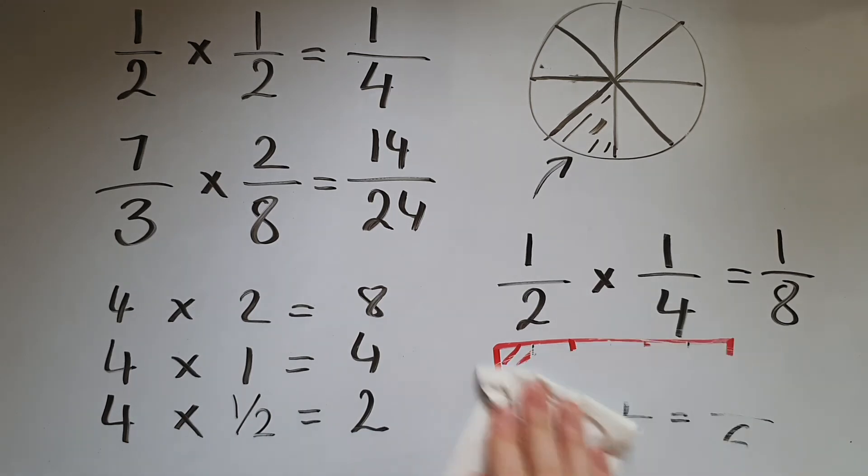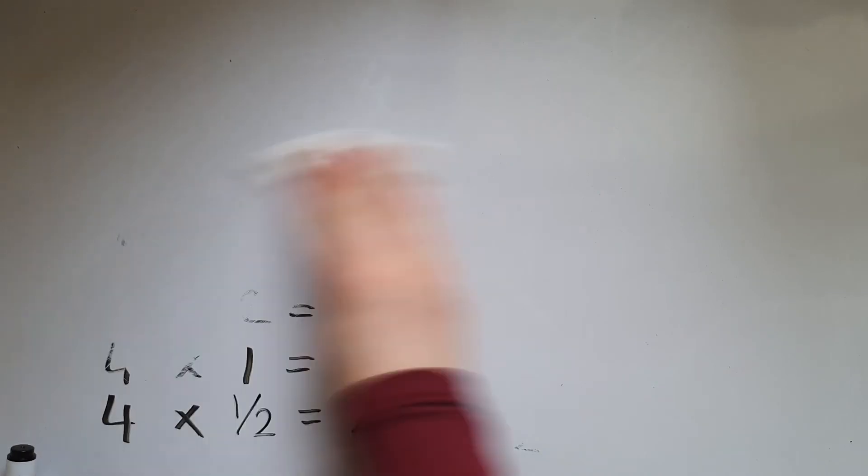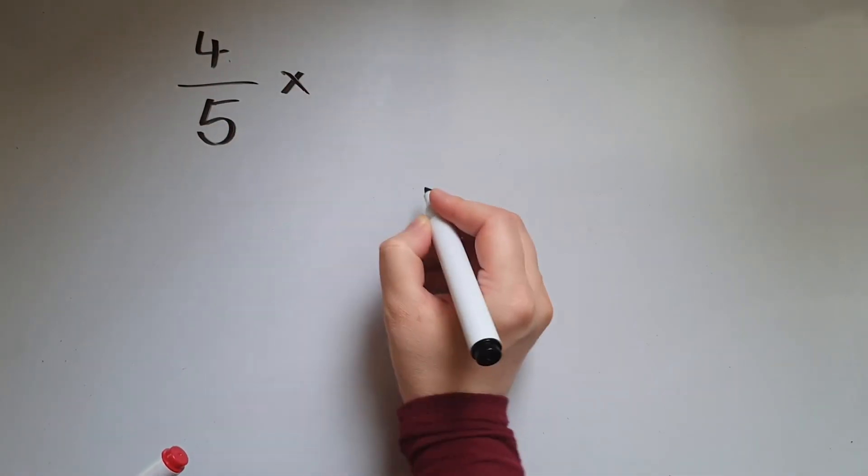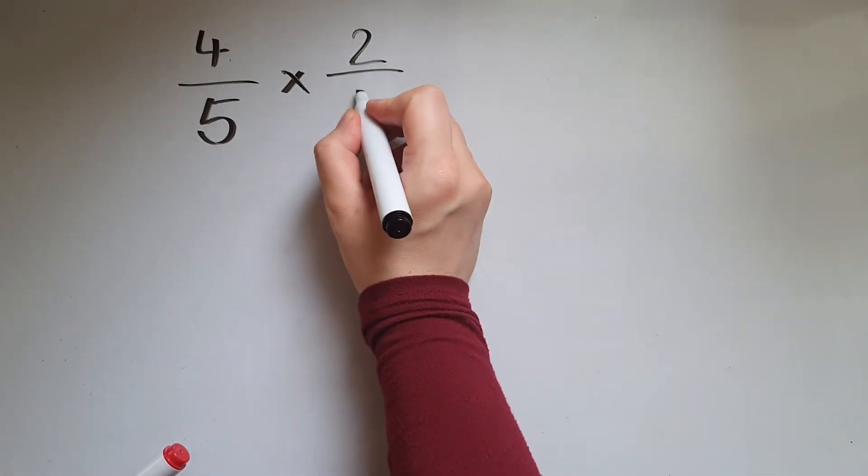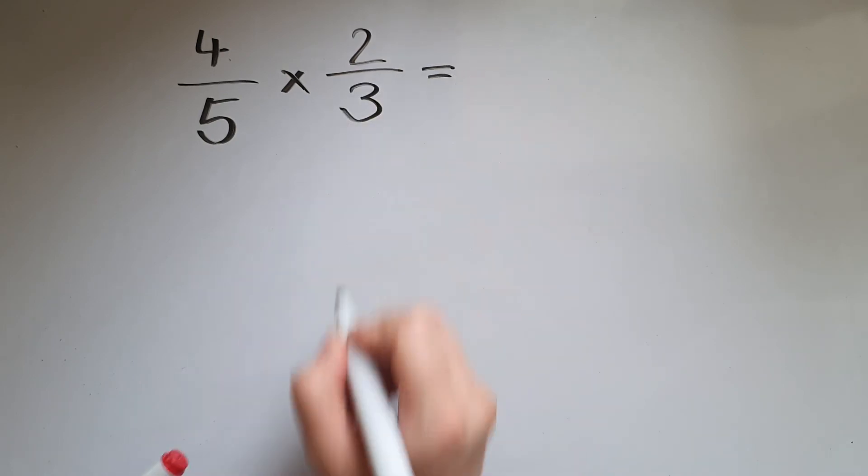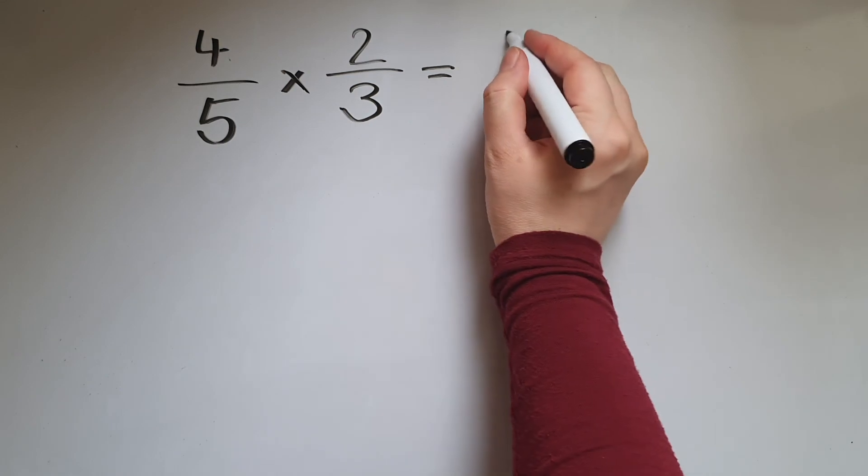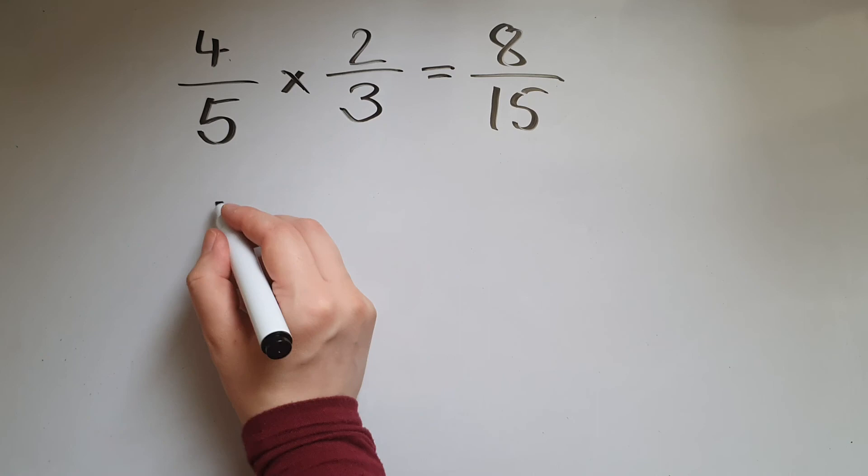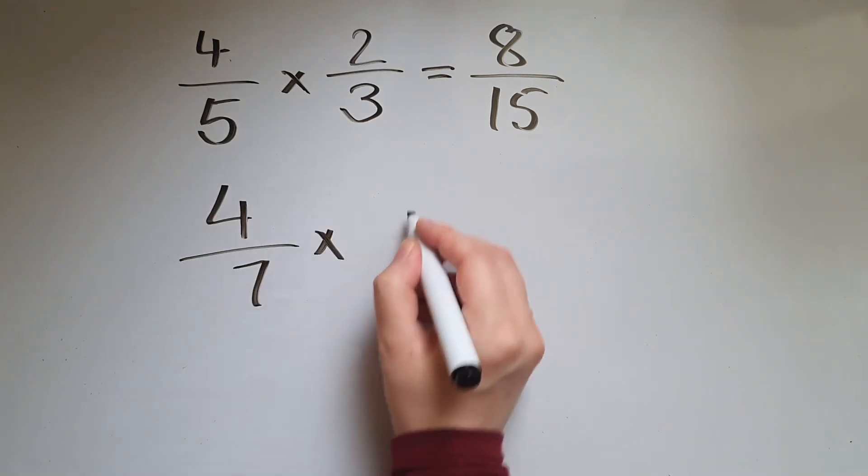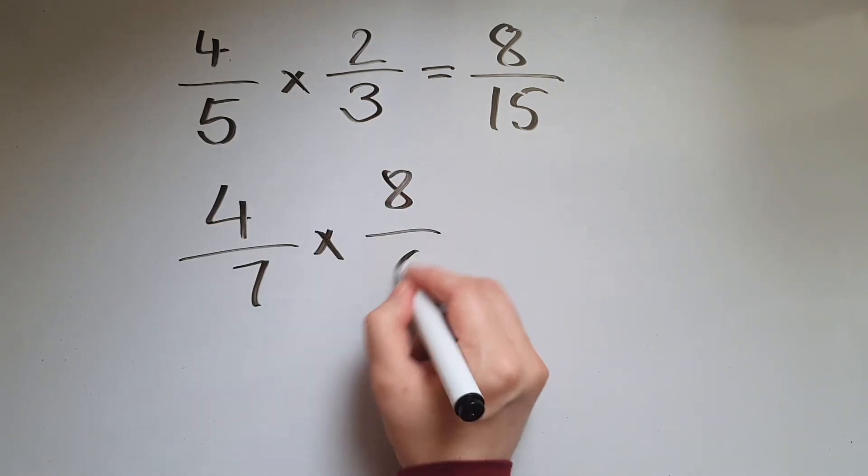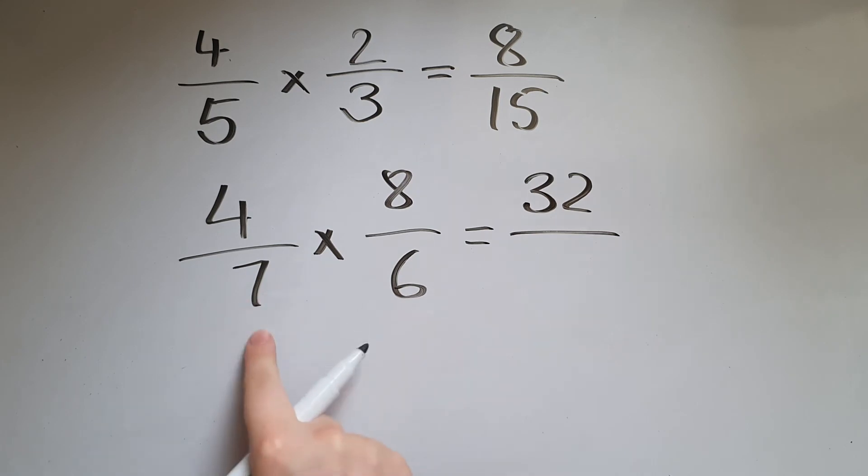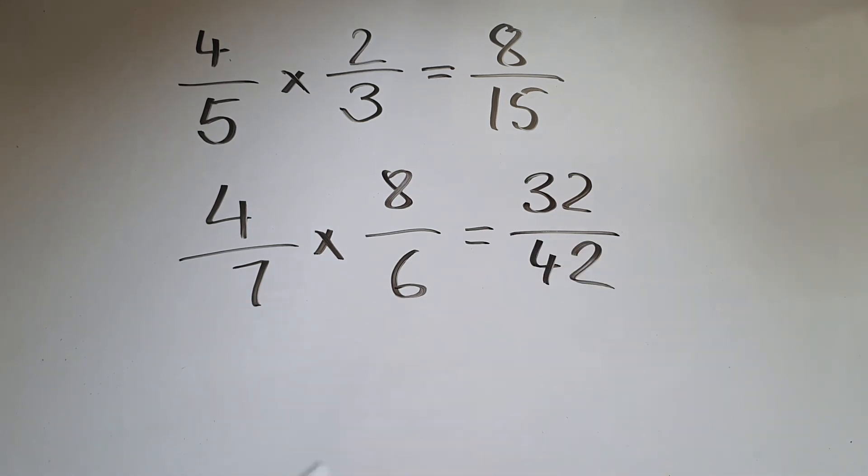Let's just try a couple more examples. So four fifths times two thirds, so four times two is eight, five times three is fifteen. Let's do four sevenths times eight sixths. So four times eight is thirty-two, and seven times six is forty-two.